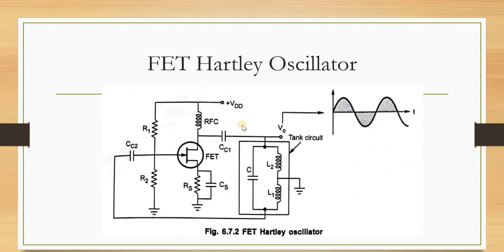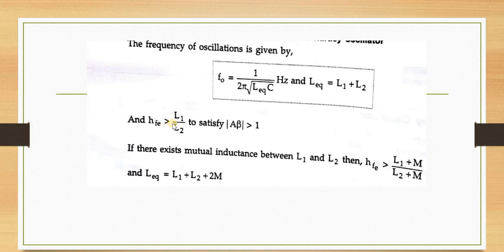If there exists mutual inductance between L1 and L2, then HFE should be greater than (L1+M)/(L2+M). The mutual inductance M must be considered, and the equivalent inductance becomes L_eq = L1+L2+2M.